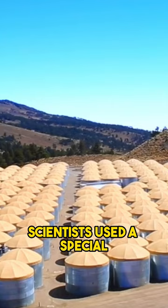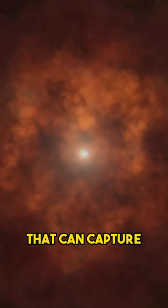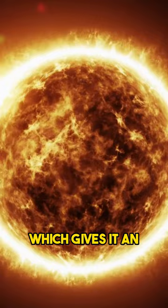Scientists used a special observatory in Mexico called HAWC, which consists of 300 large water tanks that can capture the faint traces of gamma rays in the sky. HAWC can operate 24/7, which gives it an advantage to study the sun.